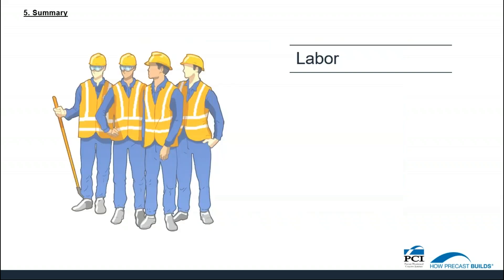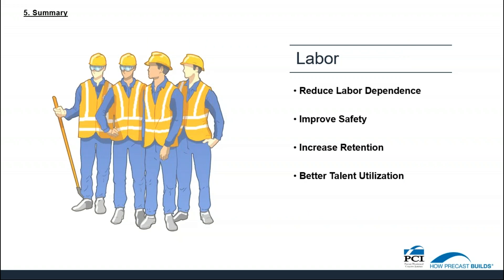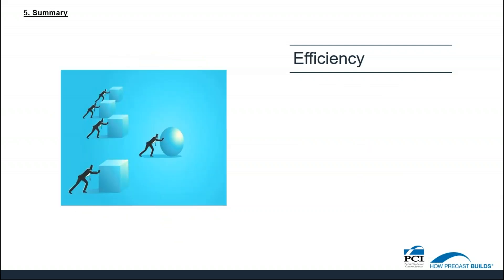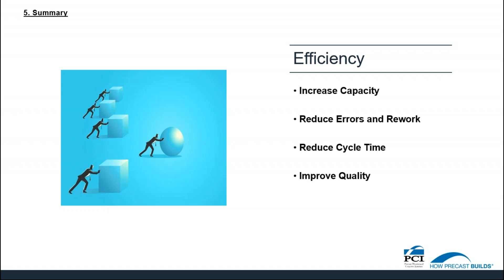In the realm of labor, automation can reduce labor dependence, improve safety for workers, increase worker retention, and enable better talent utilization. It can shift human capital away from repetitive tasks — for which machines can do better — and deploy the skilled workforce to activities where they really add value for the business. Another benefit of automation is efficiency: increase capacity by reducing cycle time, reduce errors and rework, improve quality in production. We can do more with less.